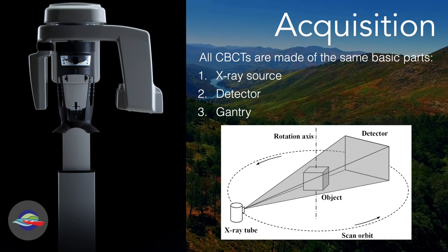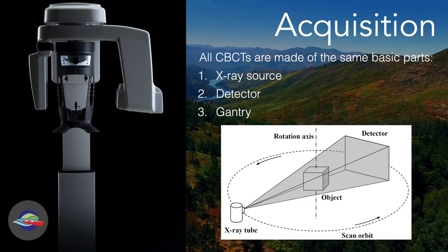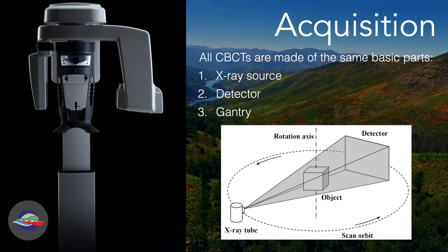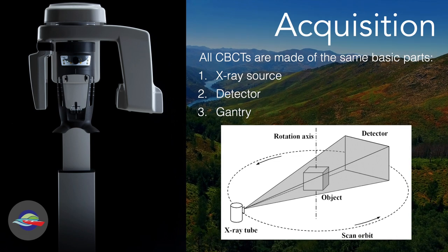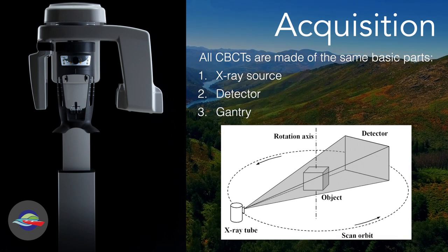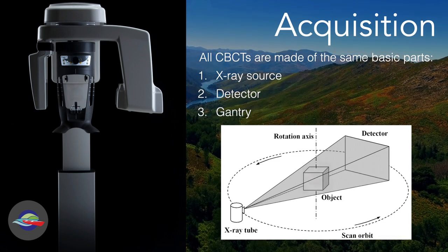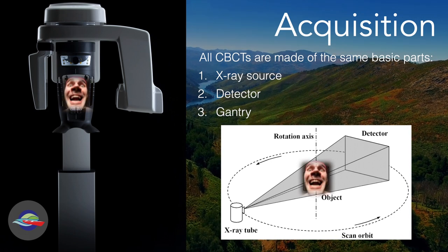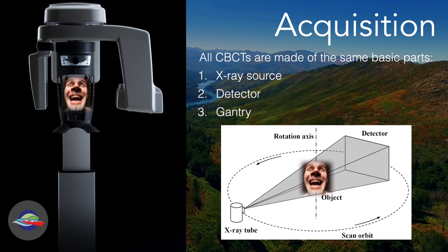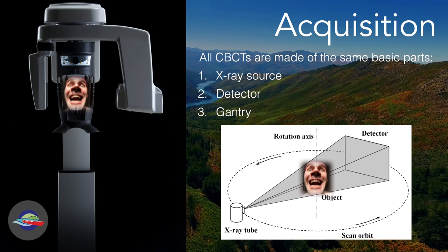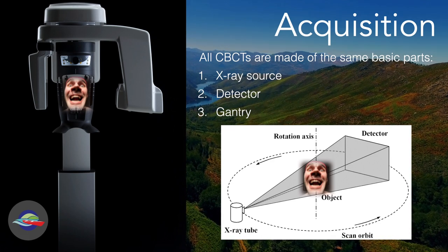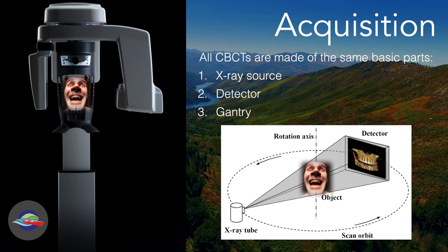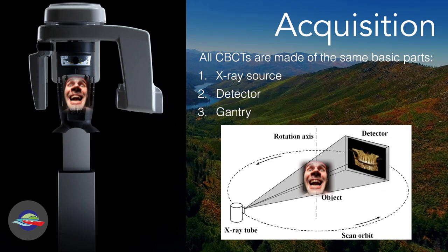The acquisition of all CT scans follows the same basic principles because they're all made of the same basic parts. Each has an x-ray source, a detector, and a gantry that these aspects can rotate on. And just as in 2D x-rays, the object of interest is centered between the x-ray source and the detector. The x-ray source gives off a burst of energy which passes through this object, and depending on the density of the object, x-rays are absorbed or passed through to the detector where an image is made.